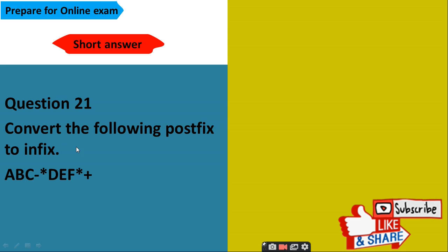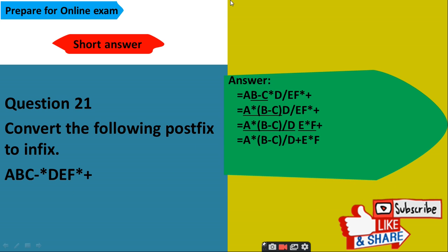Question number 21. Convert the following postfix to infix. The expression given is ABC minus star DEF star plus. First, you need to perform this operation B minus C. Then again, use this second operator and apply on this part. So, A into B minus C. Then after this, A into B minus C divided by D and perform this multiplication operation on E and F. So, E into F and after this, you will get this as your output.